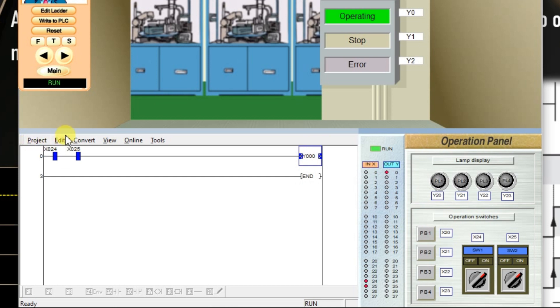If one of the input or both of the inputs are off, then output is off. We can also see the status of inputs and outputs from the IO table. Up to x27 and y27.